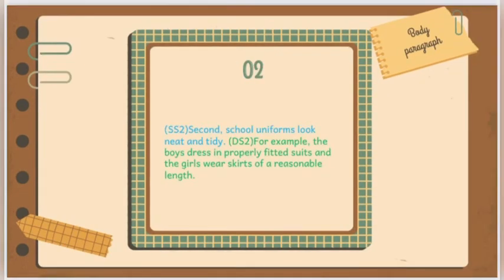The fourth line is supporting sentence two: second, school uniforms look neat and tidy. The fifth line is developing sentence two: for example, the boys dressed in properly fitted suits, and the girls wear skirts of a reasonable length.